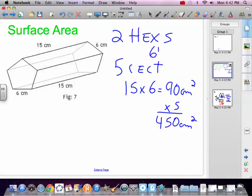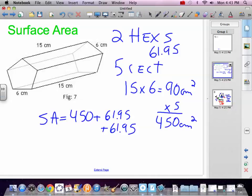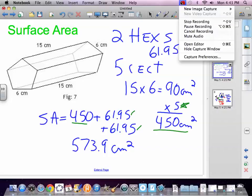So our surface area is 5 rectangles, which we've solved, 450, plus a hex plus another hex. 450 plus 61.95 plus 61.95 equals 573.9 centimeters squared. We accounted for all the surfaces. That 450 accounted for all five rectangles. 61.95 and 61.95 accounted for both bases.